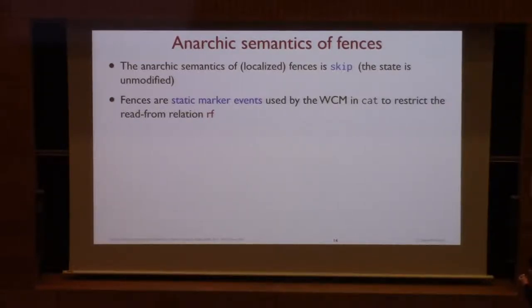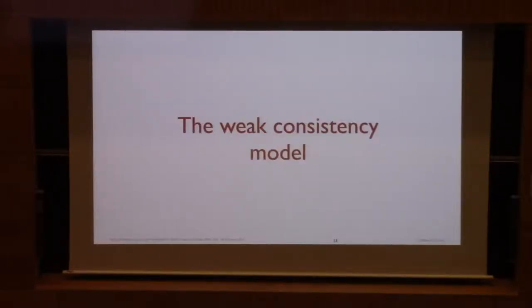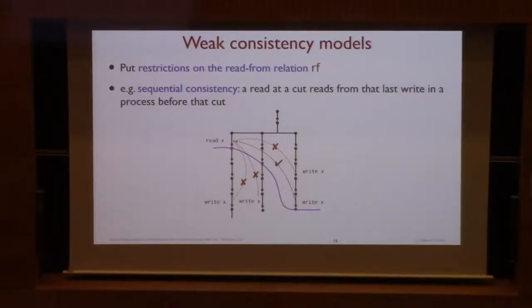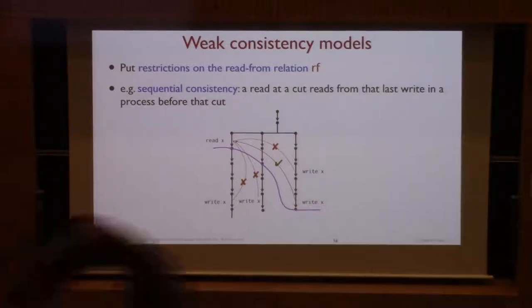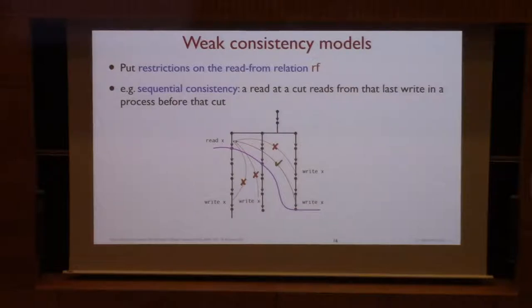Cuts represent the execution. So here you see you have initially everybody is at the beginning. Then these two do a step. Then this one does a step. Then these two go a step and it goes on like this. So this program needs fences. And fences are just kept. So in the proof of invariance they count for nothing. They are used in languages like CAT or machine just to specify the read-from relation. And so the weak consistency model is a restriction of the read-from relation which is allowed by your machine or that you need to respect for your program.